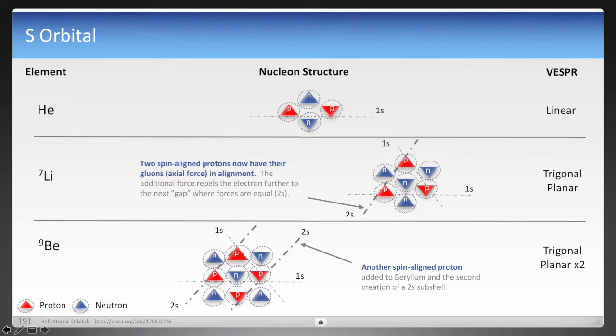And the same thing for beryllium, the next element. Now you see another proton that has been added. So you have two spin up and two spin down. As a result, you have two electrons in the 2s orbital, two in 1s orbital. On the far right, you see VSEPR. VSEPR is used in molecular structures. And it's terminology used from VSEPR, which is linear trigonal planar, trigonal planar times two. And you're going to see the same type of structure for atomic elements now that you see in molecules. And that's why I have the mapping here for VSEPR.